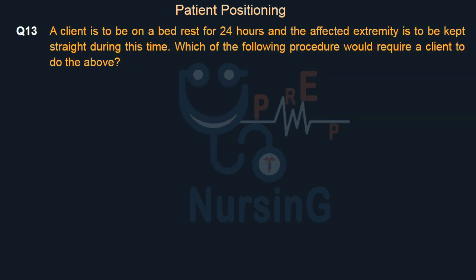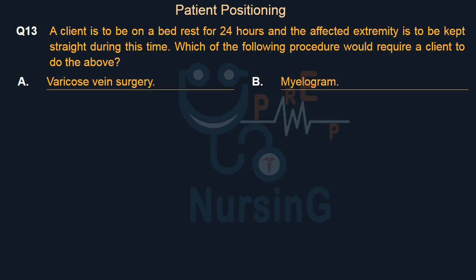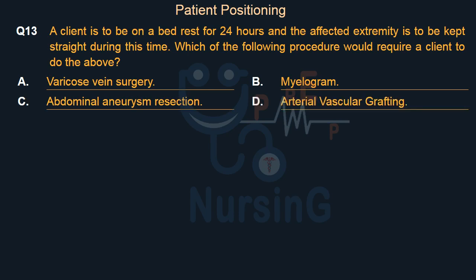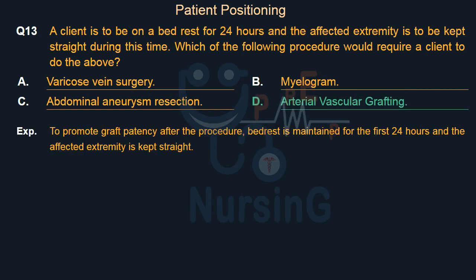A client is to be on bed rest for 24 hours and the affected extremity is to be kept straight. Which of the following procedures would require this? Option A, varicose vein surgery; Option B, myelogram; Option C, abdominal aneurysm resection; Option D, arterial vascular grafting. The right answer is Option D, arterial vascular grafting. To promote graft patency after the procedure, bed rest is maintained for the first 24 hours and the affected extremity is kept straight.